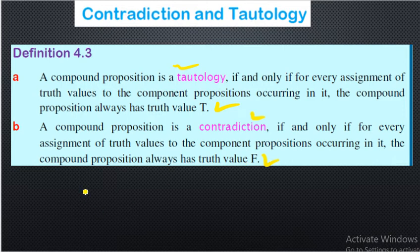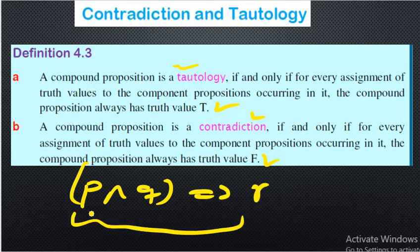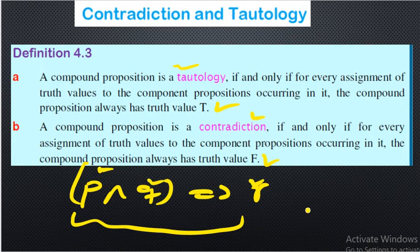For example, we can say p and q implies r — this is a compound proposition. If this compound proposition is always true for any input truth values of p, q, and r, we call it a tautology. If it is always false, we call it a contradiction. If it's not always true and not always false, it's going to be neither.